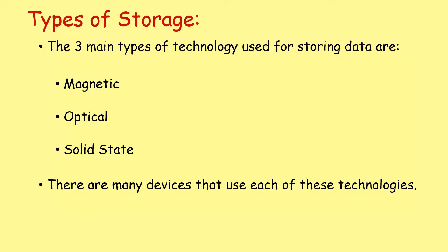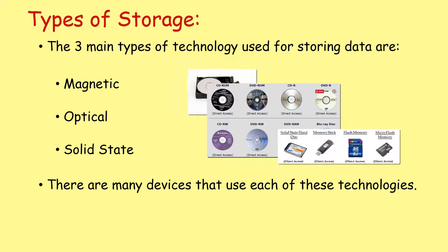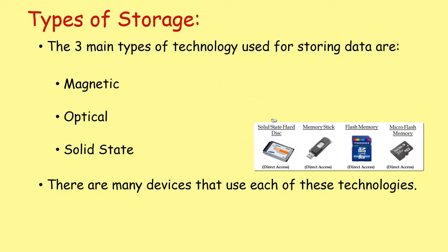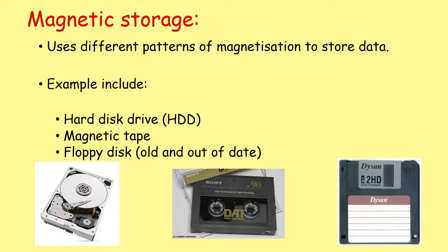There are three main types of secondary storage that we need to know about: magnetic, optical and solid state. In each category, there are many devices that make use of these technologies. If we start with magnetic storage, this uses different patterns of magnetization to store data. Examples include hard disk drives or HDDs, magnetic tapes and cartridges, and of course the old favourite, the floppy disk.